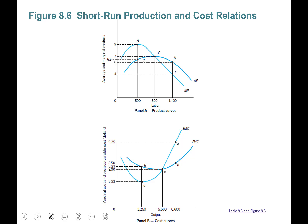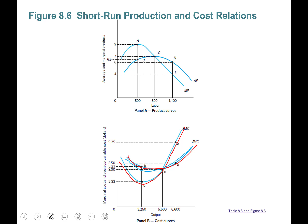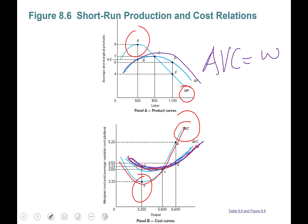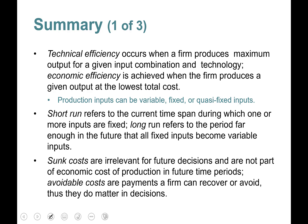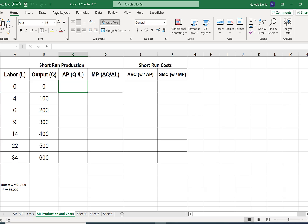You have average variable cost and marginal cost curves — they are 100% related. Marginal cost is related to marginal product: the highest point of marginal product corresponds to the lowest point of marginal cost. For average variable cost and average product: average variable cost equals wage divided by average product, so at the highest point of average product you see the lowest point of average variable cost. You can check out the summary of this chapter. Let's now work on the Excel example.